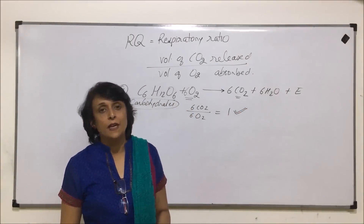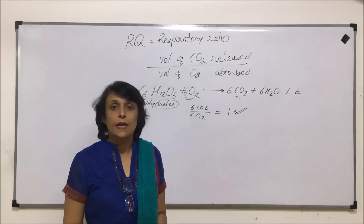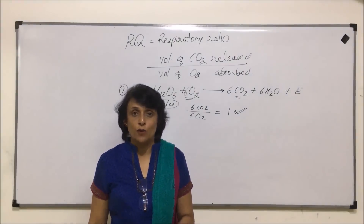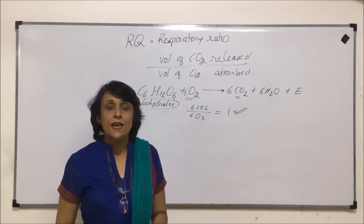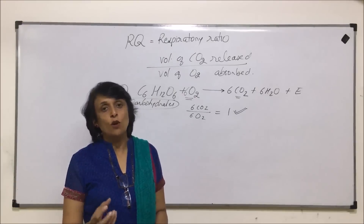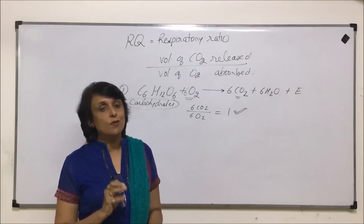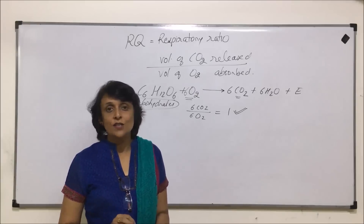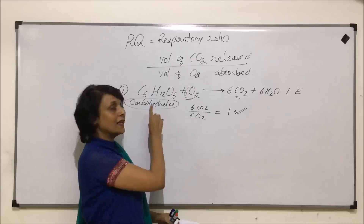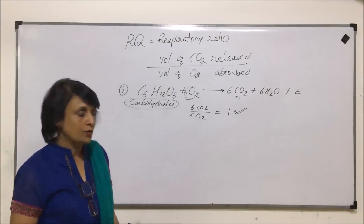Questions may not always ask directly about carbohydrate. They can give a food item rich in carbohydrate — for example, potatoes or rice. We know potato has only starch, rice has only starch, and starch is a carbohydrate. So RQ is 1. It can be framed using the name of the substrate or a food item.